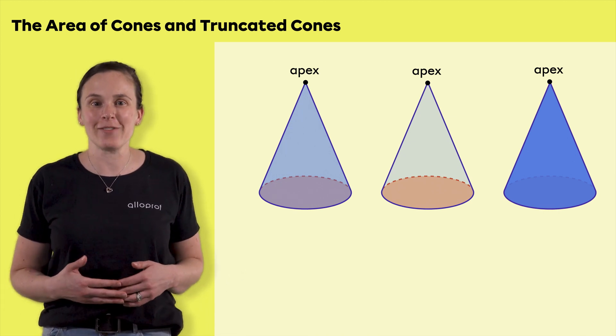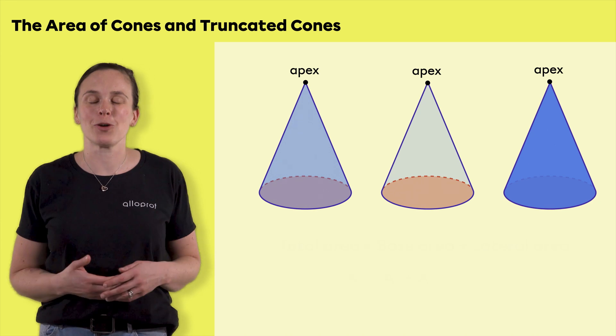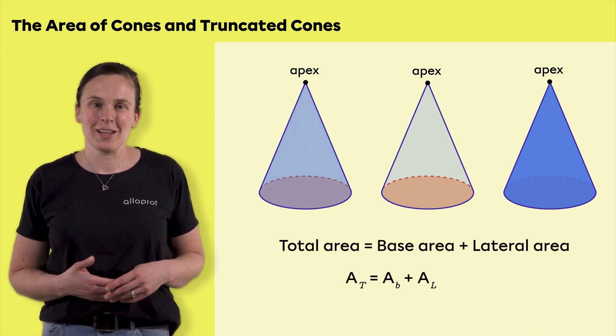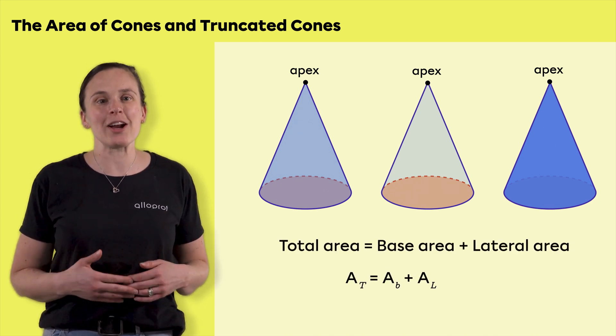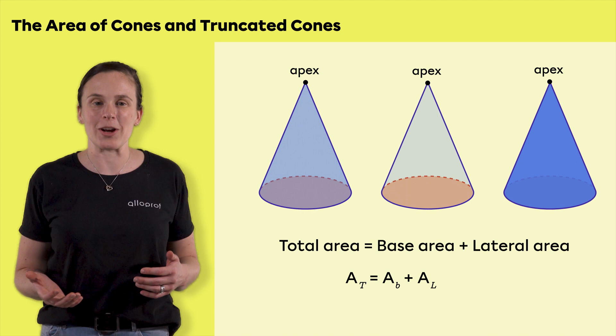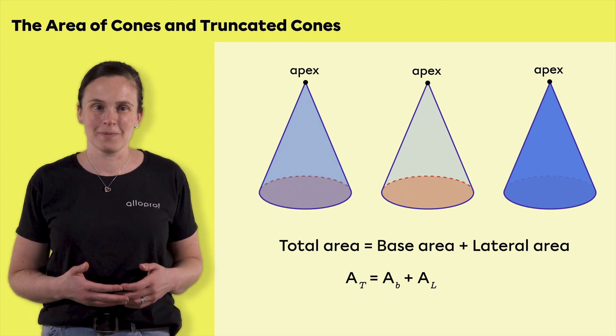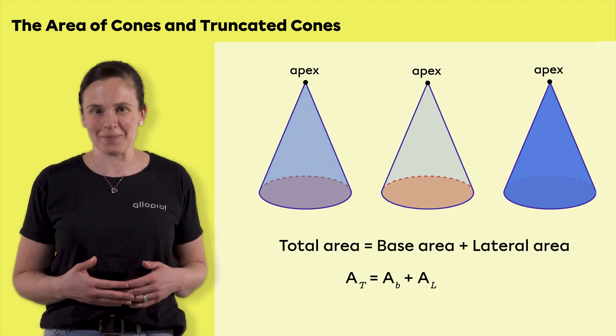To find the area of a cone, you need the following formula. The total area is equal to the area of the base plus the lateral area. Let's look at the formula together.